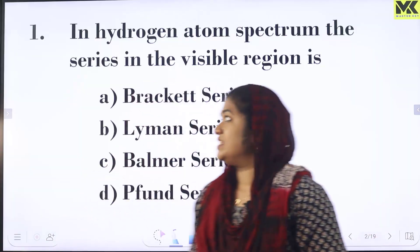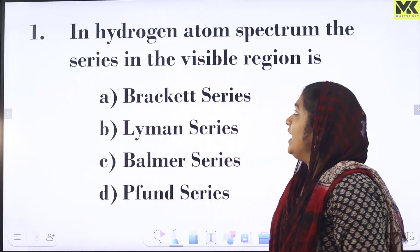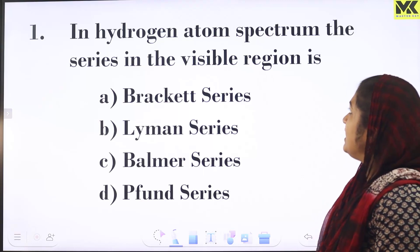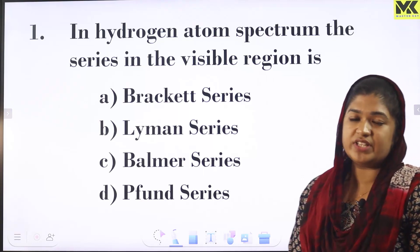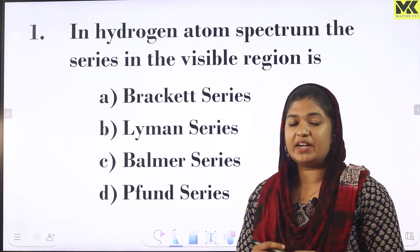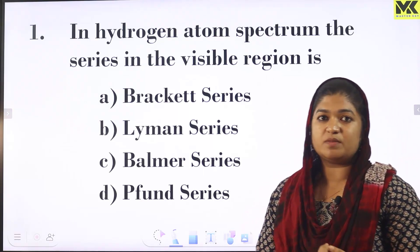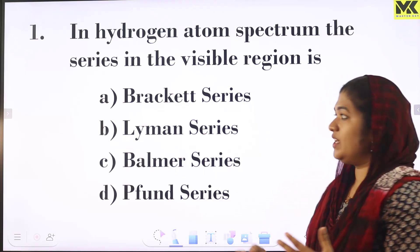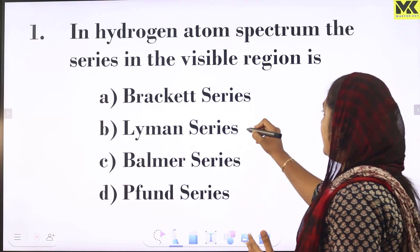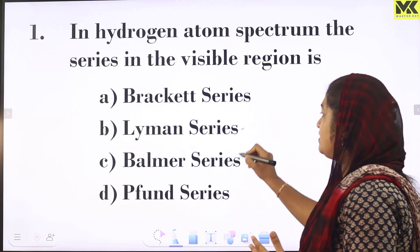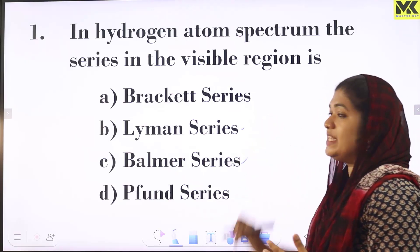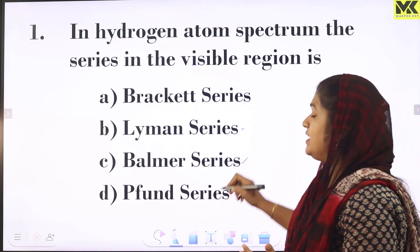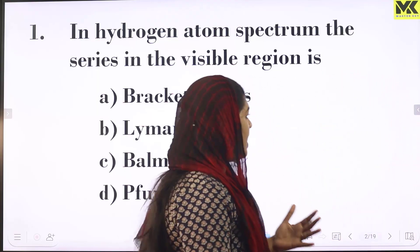First question: in hydrogen atom spectrum, which series is in the visible region? The hydrogen atom spectrum has 5 series: the Lyman series, Balmer series, Paschen series, Brackett series, and Pfund series.